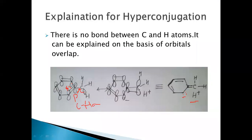Since C–C bond rotation is free, this p orbital can overlap with any of the C–H sigma bond orbitals. So as there are more alpha hydrogens, there will be more resonance structures — the number of alpha hydrogens is directly proportional to the number of resonance structures. These are all hypothetical, imaginary structures that explain the hyperconjugation effect.